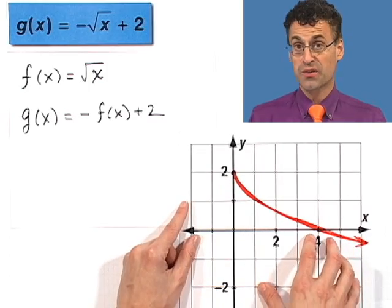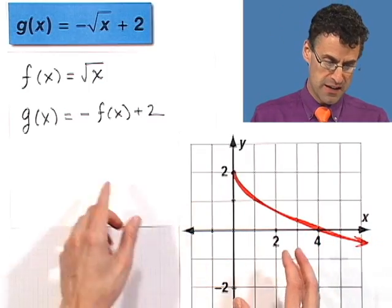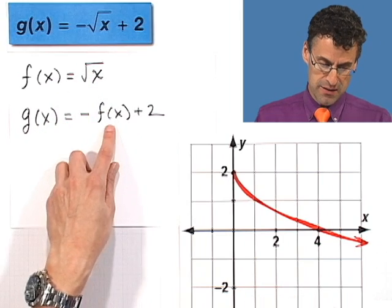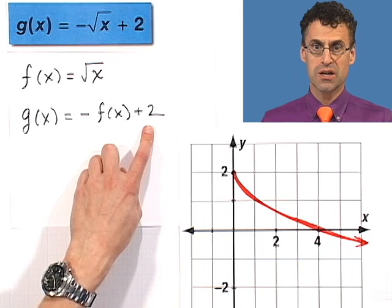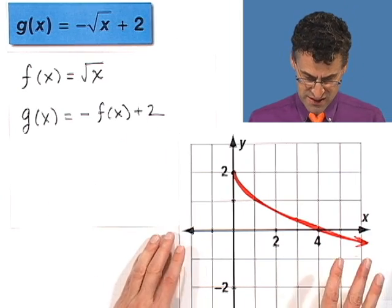And notice that we actually graph g without plotting any points, but really finding out a seed function and then, in this case, doing a reflection over the x-axis and then a vertical translation up two units. So that's the idea.